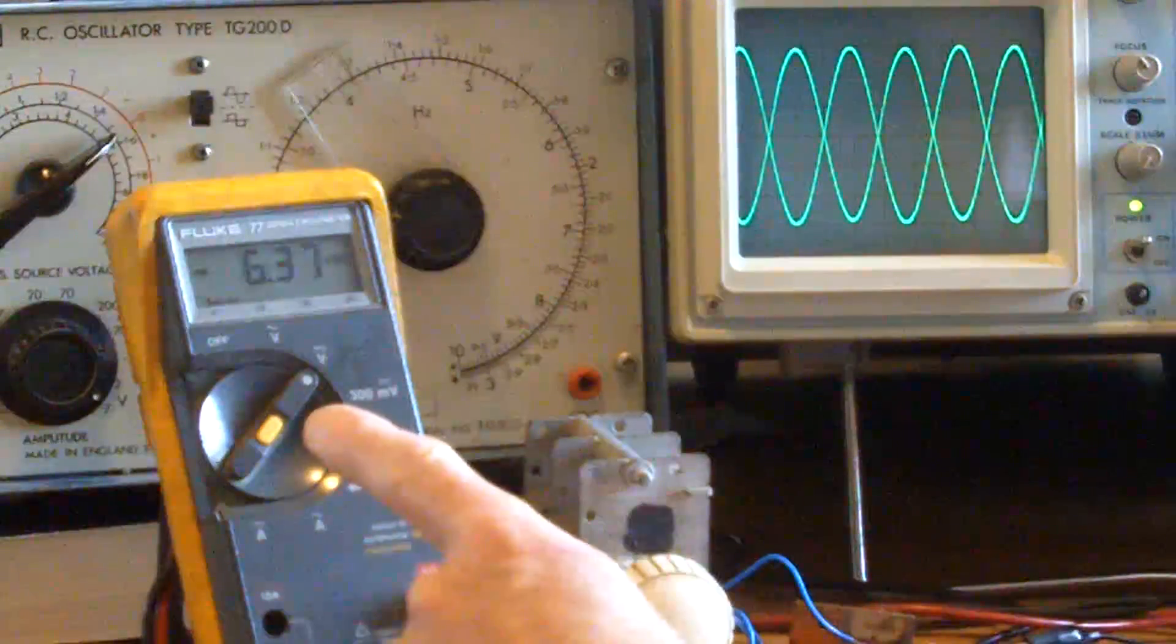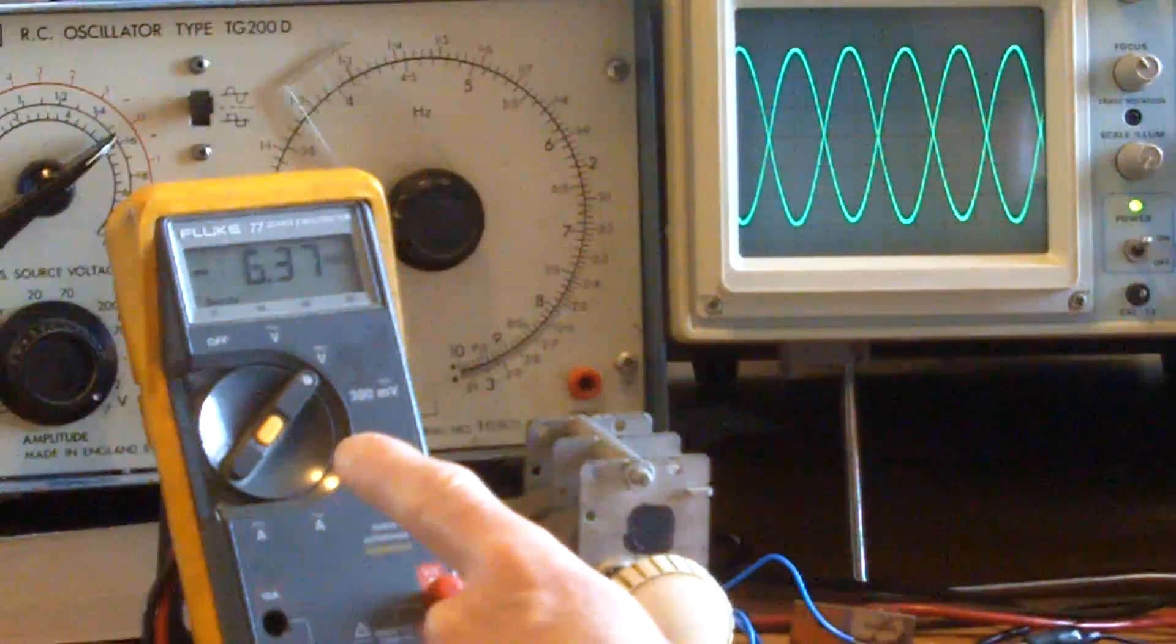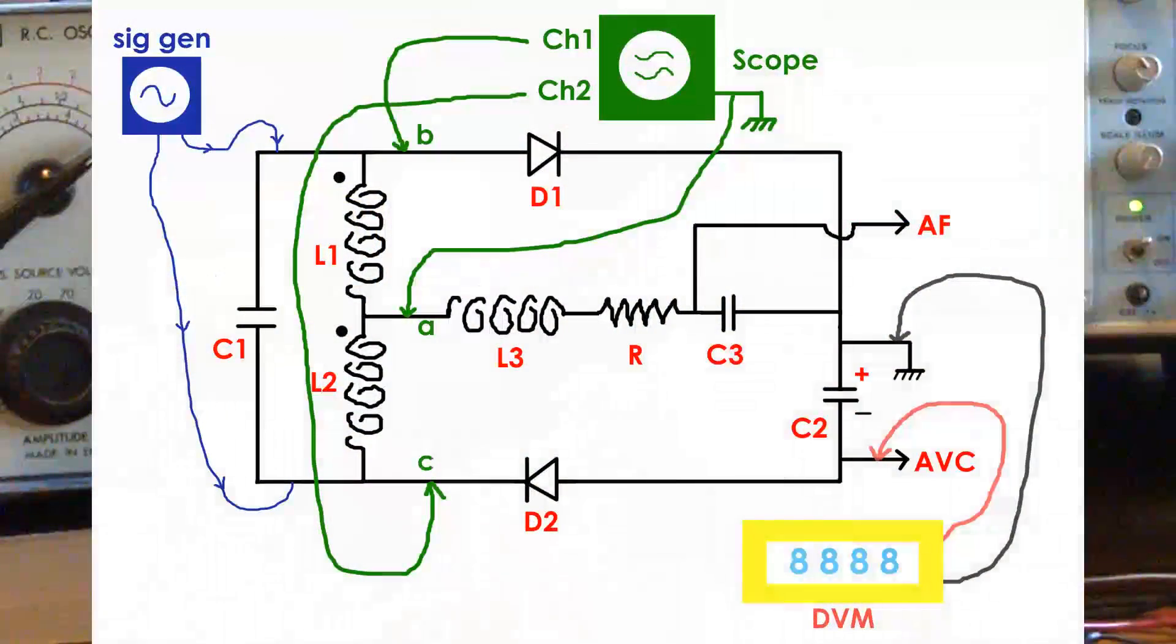The digital meter is connected across the electrolytic capacitor on the positive and negative.